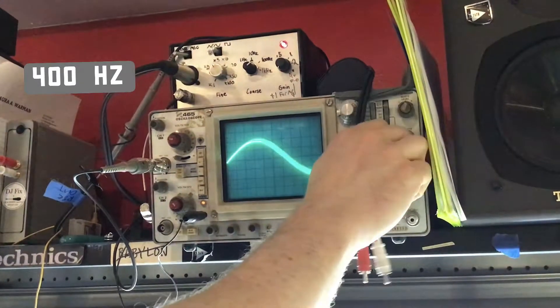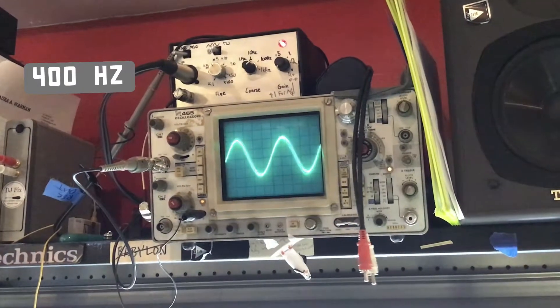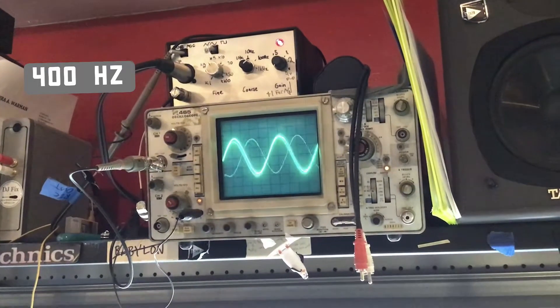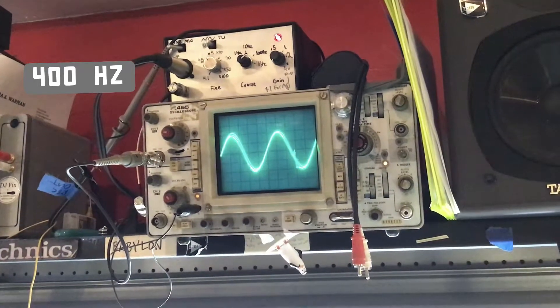400 cycles, 400. Same sort of thing. Very linear. Looks like it's consistent with all the other volume levels that we've seen so far.